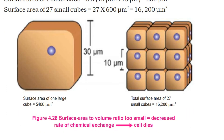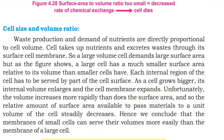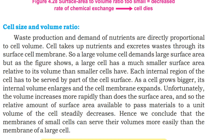A small surface area to volume ratio leads to a decreased rate of chemical exchange, and the cell dies. Waste production and demand for nutrients are directly proportional to cell volume. The cell takes up nutrients and excretes waste through its surface — the cell membrane.